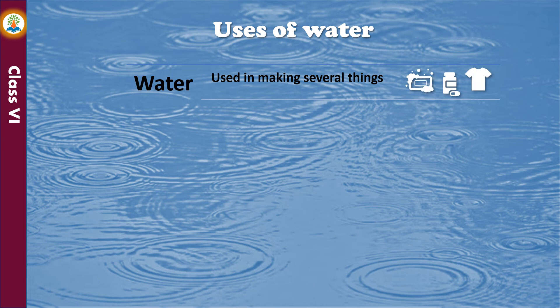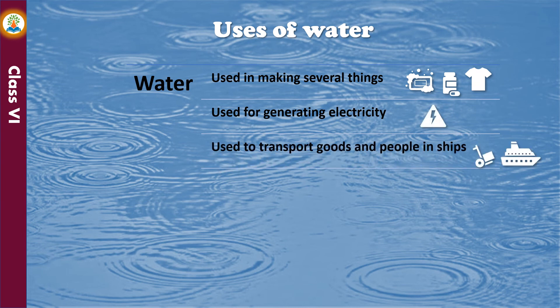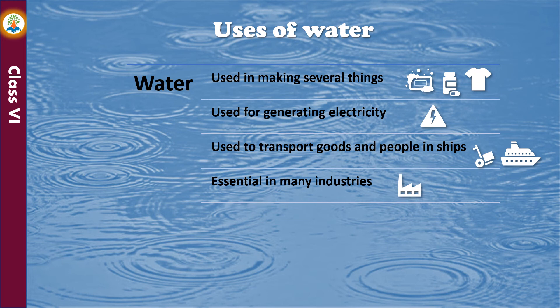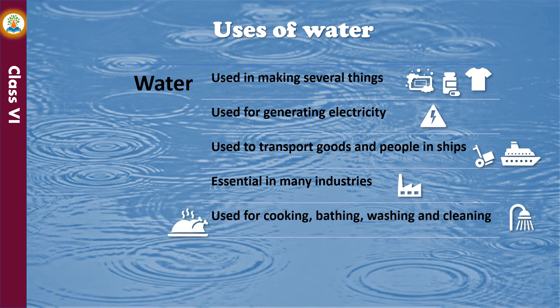Water is used in making several things such as soaps, medicines, and fabrics. Water in dams is used for generating electricity. Water is used to transport goods and people in ships, and in many industries such as paper, fertilizers, and chemicals. Water is used for cooking, bathing, washing, and to irrigate fields and grow crops. Water is also used as a fire extinguisher.